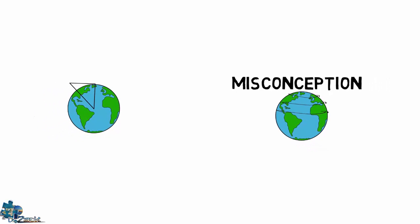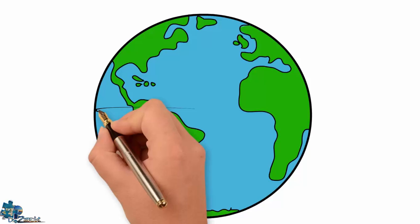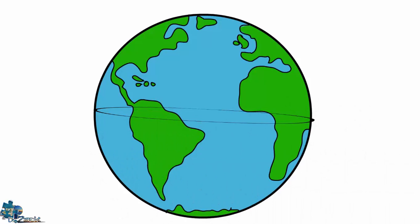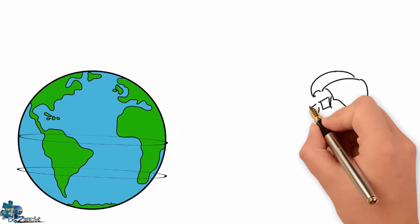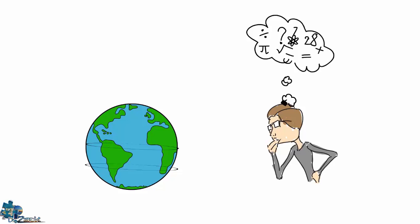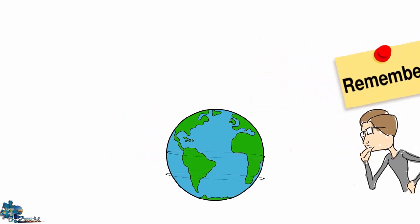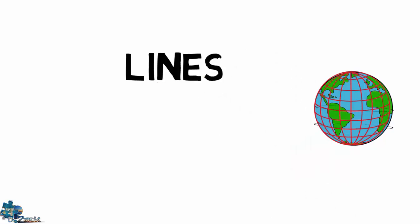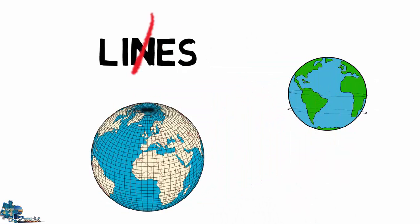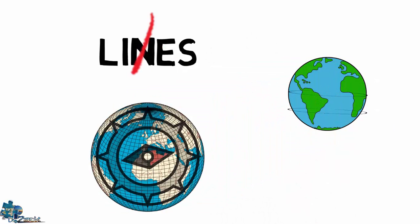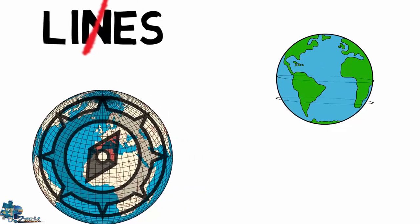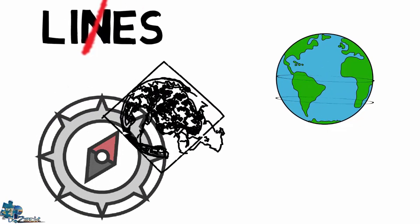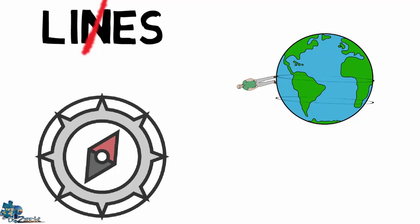I can see how this can be confusing, because if you take a piece of string and wrap it around the equator and then also do the same for the Tropic of Capricorn, it is clear there is a difference in the size and curvature between the two. But let's not overthink things. We have to remember that the latitude and longitude lines are just imaginary lines imposed on the globe for the purpose of navigation.